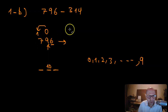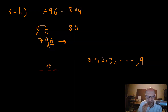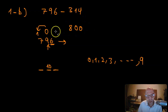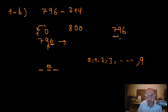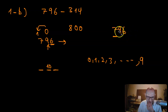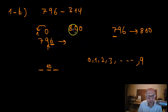All digits to the right of the tens place become 0, so 796 rounded to the tens place becomes 800. Similarly, if you round 796 to the hundreds place value, the number also becomes 800. So whether you round to the tens or hundreds place, 796 becomes 800.